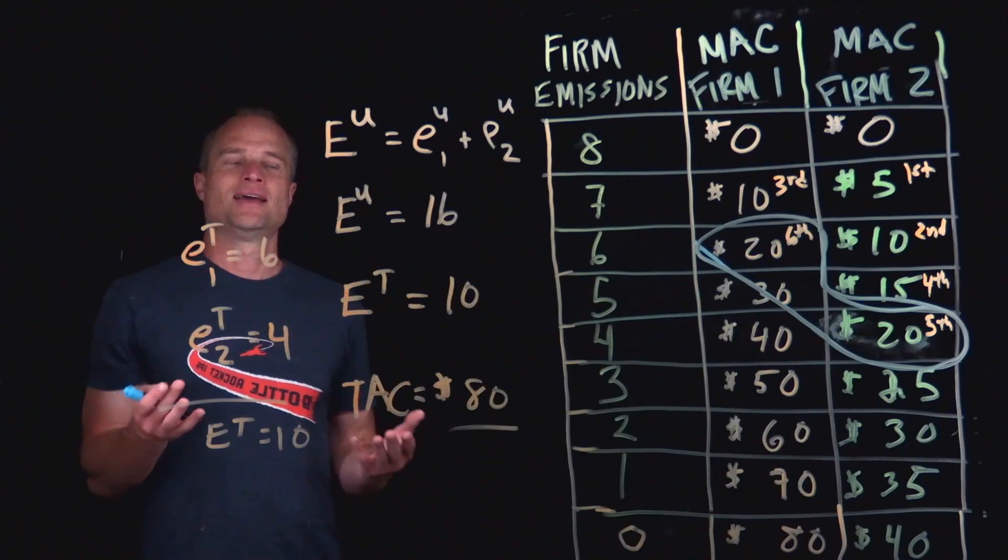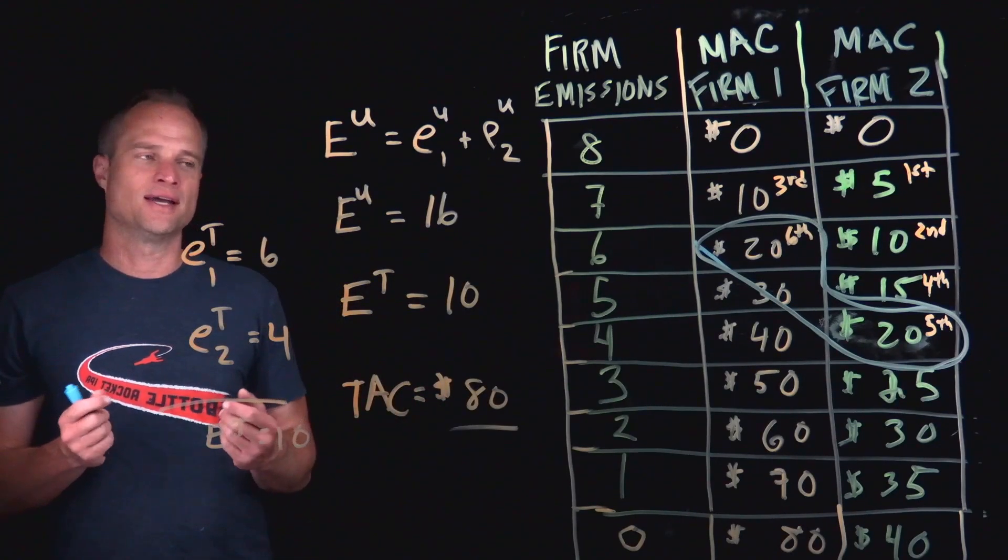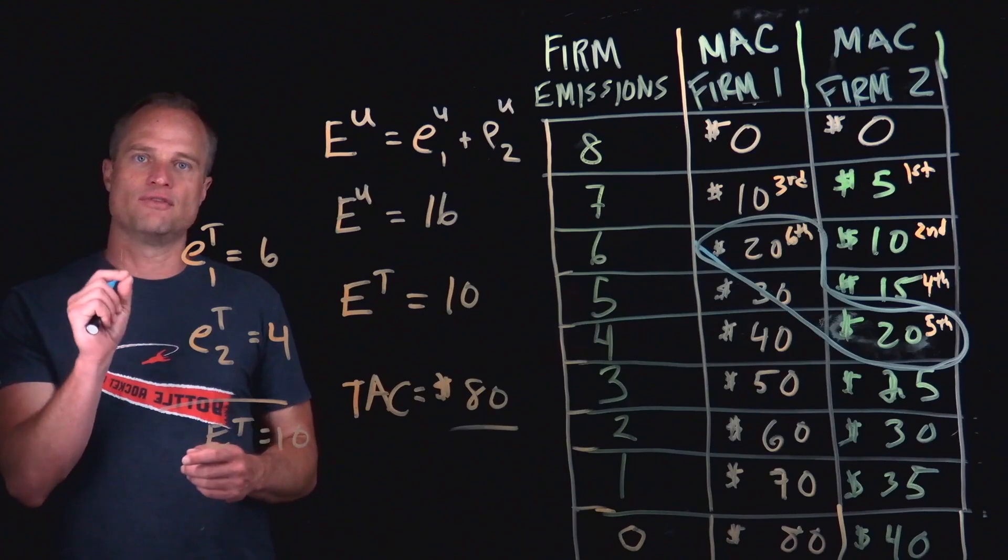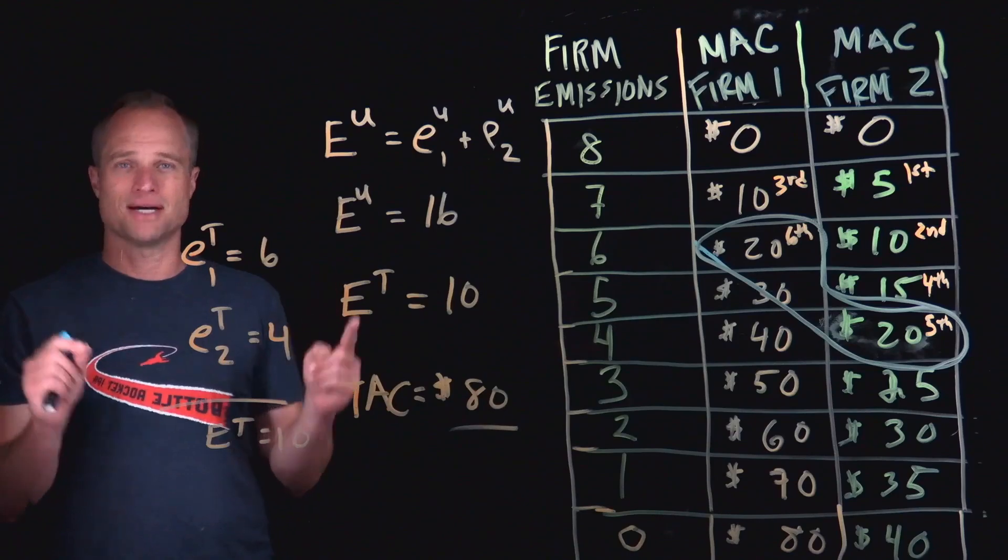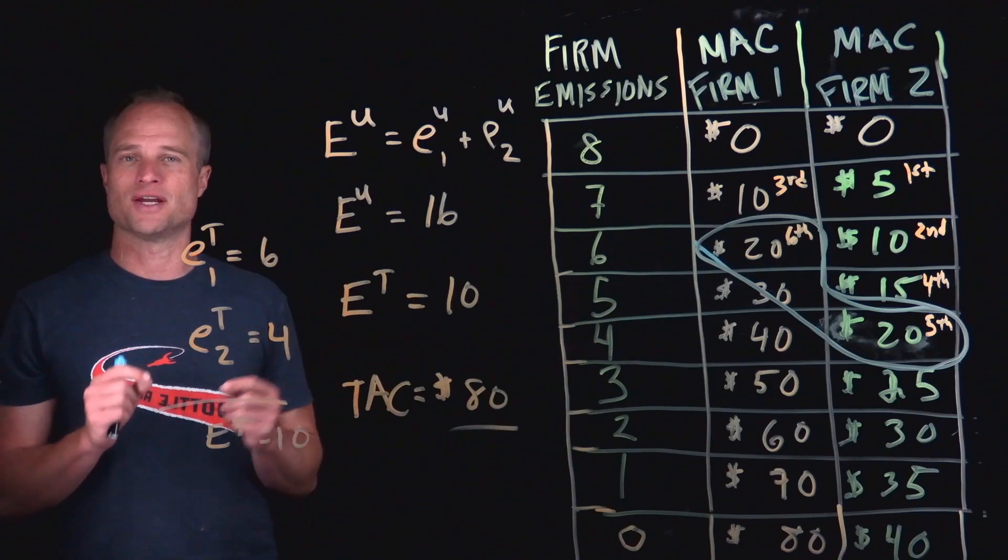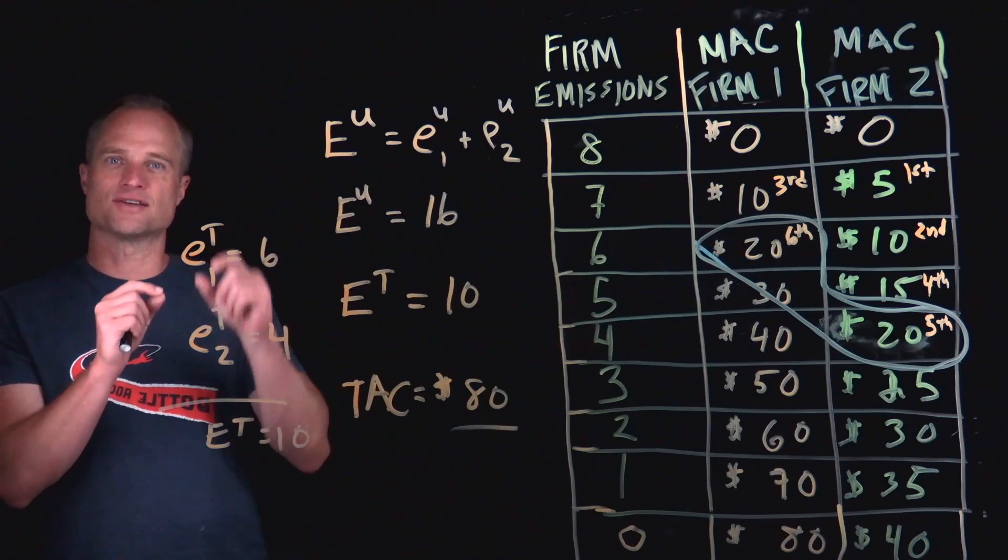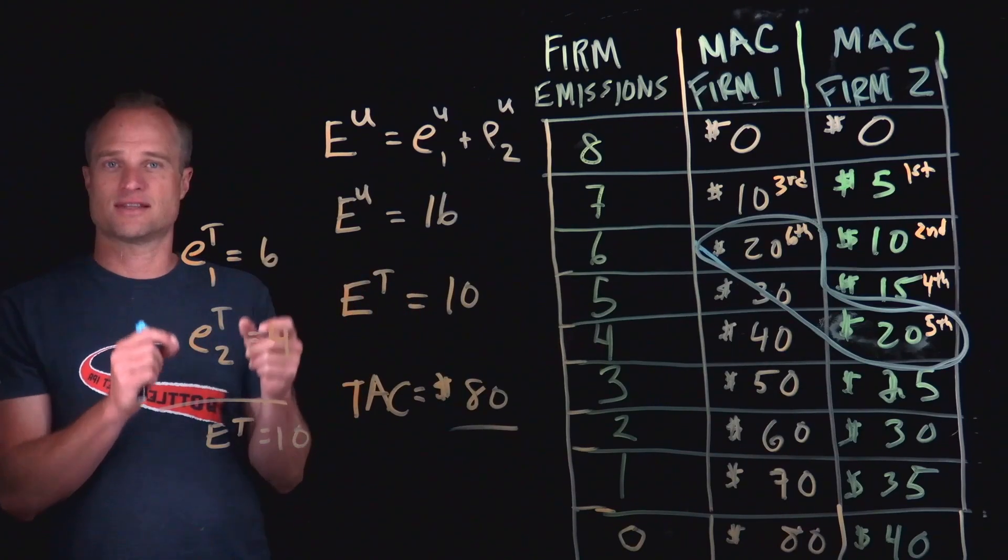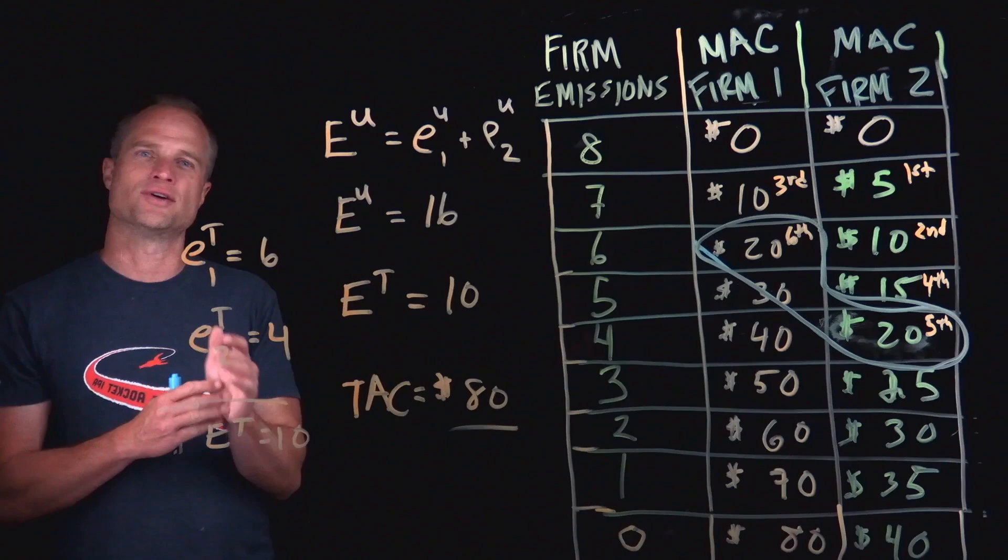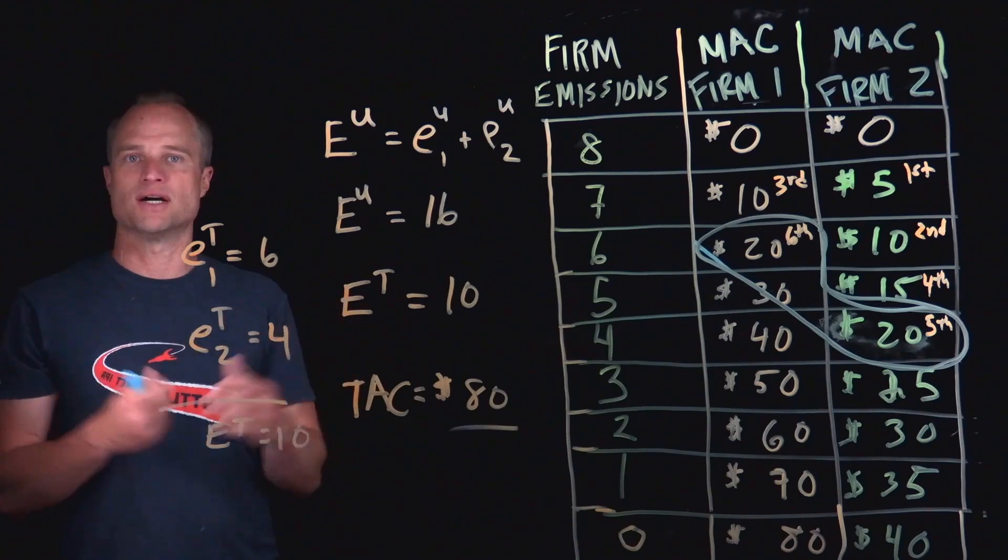If the marginal abatement costs of the firms at their chosen emissions are not equal, then it means that somebody or some firm can do it cheaper than another. And so as long as there's that ability to do something cheaper, then if you don't exhaust that, so that the marginal abatement costs are equal, then you're kind of leaving money on the table.